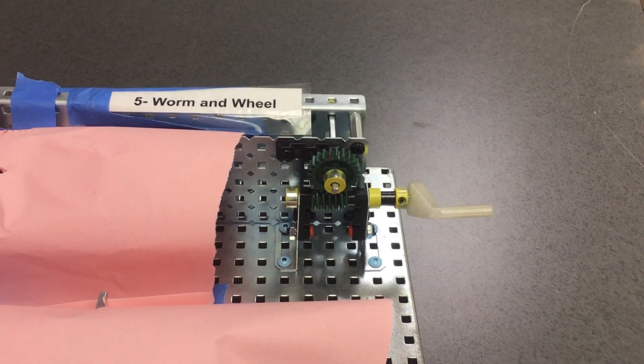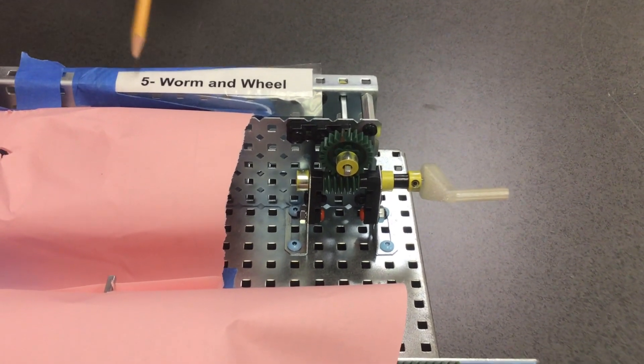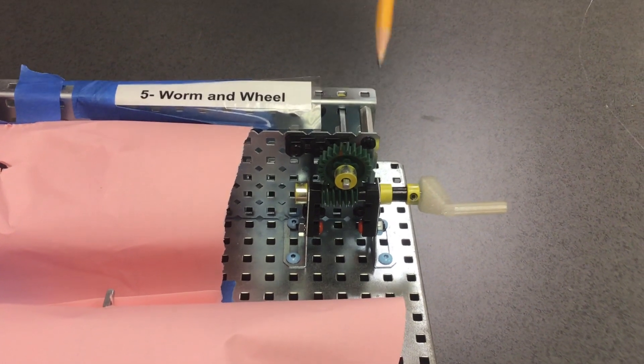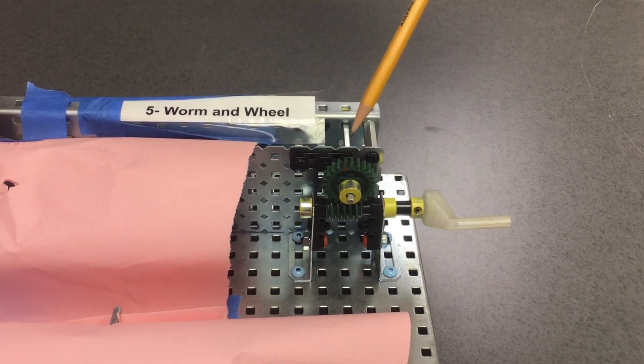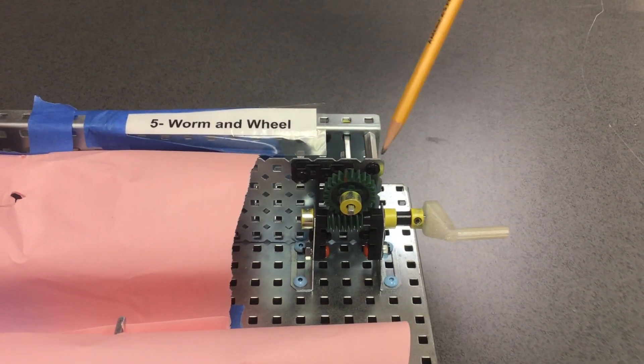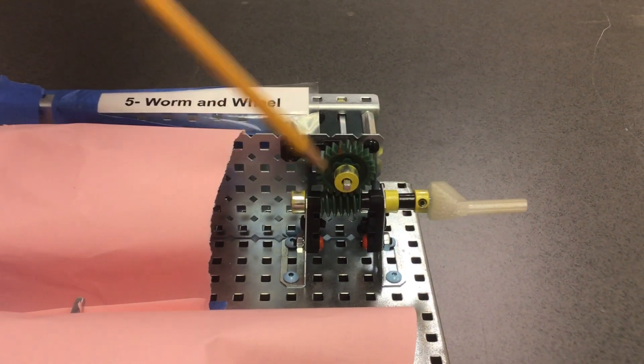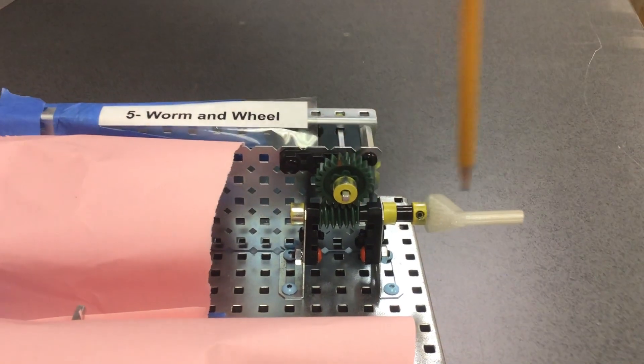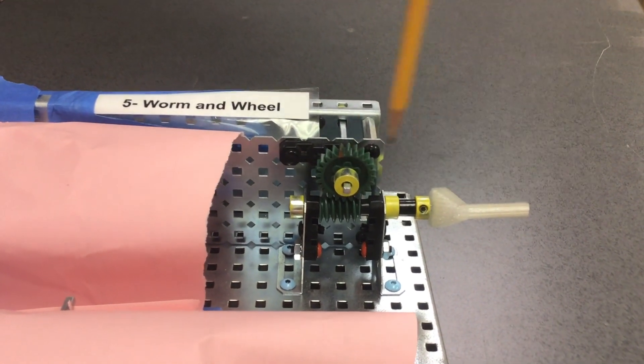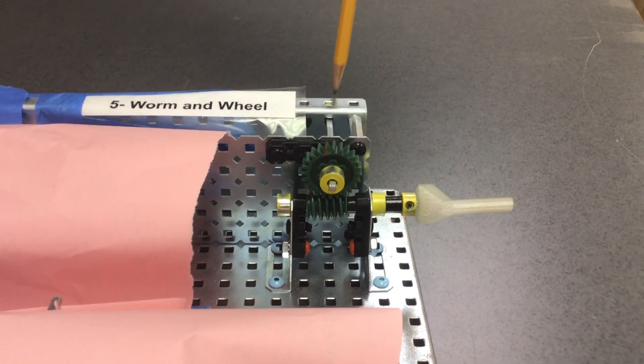Our next mechanism is the worm and wheel assembly. The worm and wheel assembly has two different types of gears that are working together. This is called the worm and this is the wheel. The worm is attached to our input and our wheel is attached to our output.